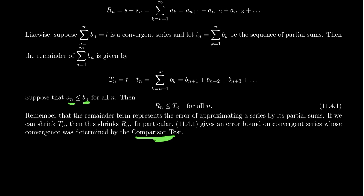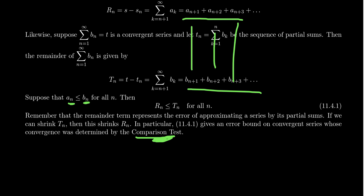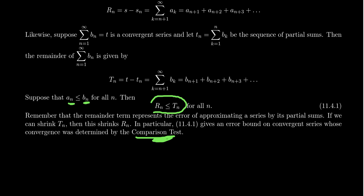If we use the comparison test to show the a series is convergent, and the terms a sub n are always smaller than b sub n, then since r sub n and T sub n are just sums of these terms, the remainder r sub n for the a series will be less than or equal to the remainder T sub n for the b series. So any error bound bigger than T sub n will also be bigger than r sub n. As we often compare a series to an integrable series, we can use the integral test error bound and apply it to our messier comparable series.